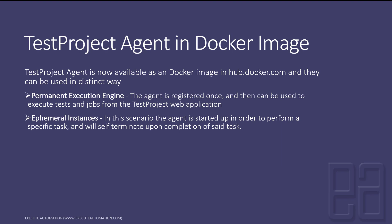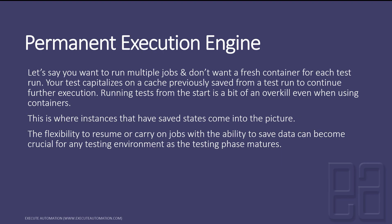Let's discuss the permanent execution engine in further detail. Let's say you want to run multiple jobs and don't want a fresh container for each test run, or your test capitalizes on cached data from a previous test run. Running tests from scratch is overkill when using containers, as it has to download a lot of resources from hub.docker.com and takes significant bandwidth on slow connections. This is where instances that save state come into picture, and the flexibility to resume jobs with saved data becomes crucial as your testing phase matures.